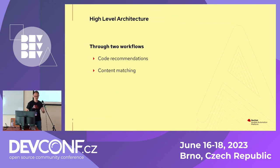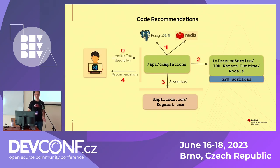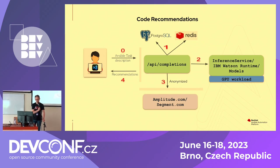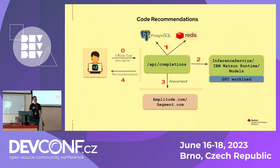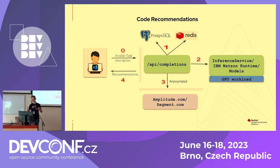Now let's go through the high-level architecture. I'll walk you through the two workflows we just demoed. The first is code recommendations. When the user is in VS Code and types the Ansible task description — step zero — they hit enter, and the plugin sends a request to the API endpoint. This API endpoint talks to the Redis cache and Postgres database to do housekeeping work such as user validation and rate limiting, because it's going to be a free service and we want to make sure everyone has a fair share of usage.